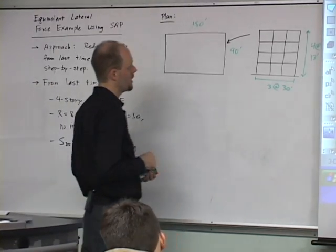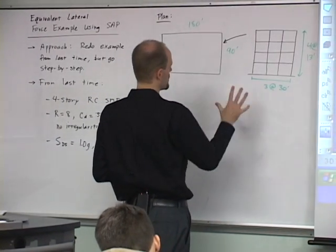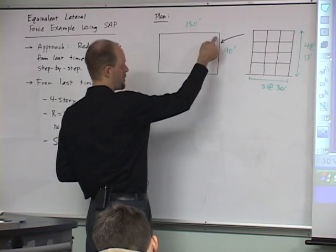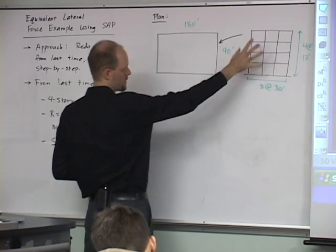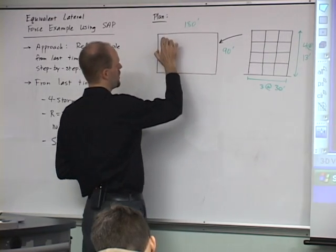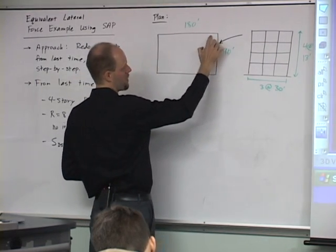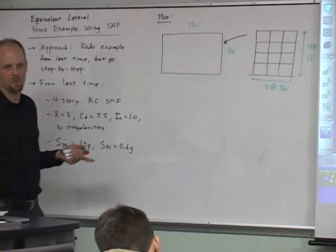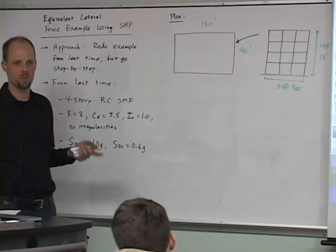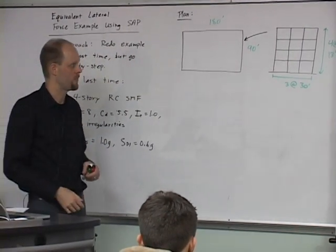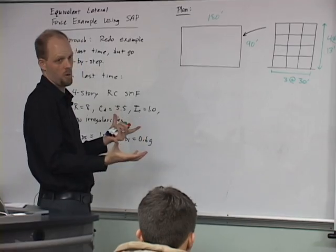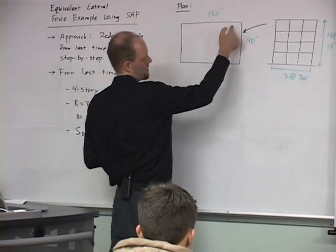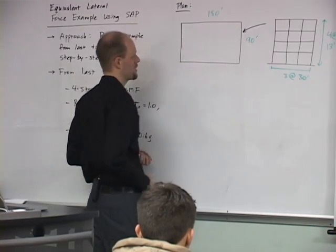So this is for the perimeter frame — we've got a perimeter frame here and here that looks like this, and we've got a perimeter frame on this side. We're not going to look at that today; we're just going to do a 2D frame. If we want to do a 3D model we could — this would be 6 bays instead of 3 bays, it's twice as long.